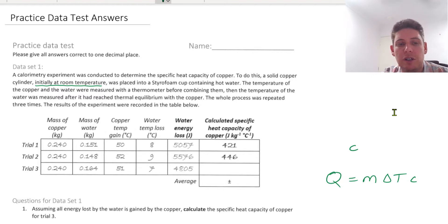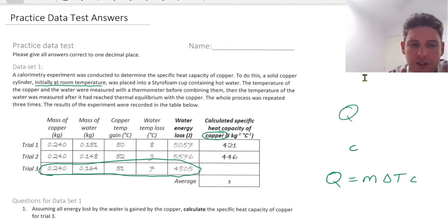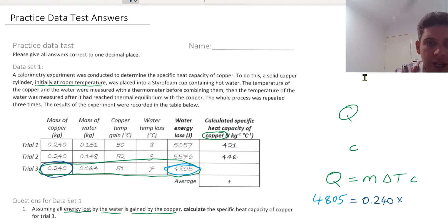So we need to use the information in trial 3 to calculate little c. In the question, it says assuming all energy lost by the water is gained by the copper. So the water energy lost here is equal to Q. We have the mass of the copper, so that's our M. Our change in temperature of the copper. And we don't know what C is.